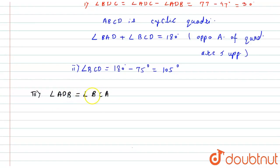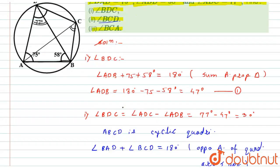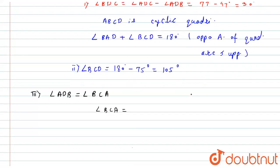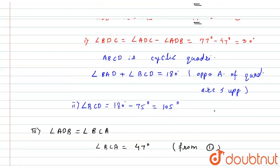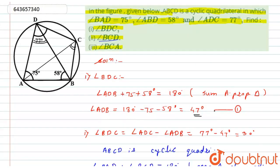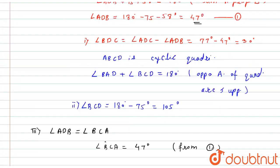Since angle ADB was calculated as 47 degrees (from equation 1), angle BCA also equals 47 degrees. We have now found all three required answers: angle BDC equals 30 degrees, angle BCD equals 105 degrees, and angle BCA equals 47 degrees. I hope you liked the solution.